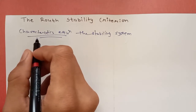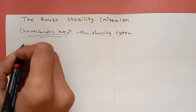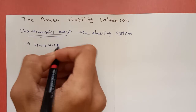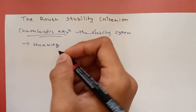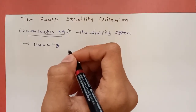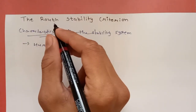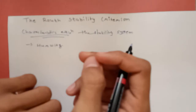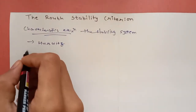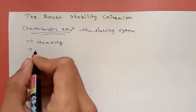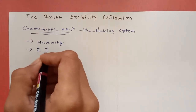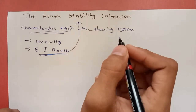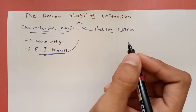The first scientist was Hurwitz, who indicated how we can find stability from the characteristic equation using a method of derivation — requiring a number of derivations. The other scientist, E.J. Routh, invented another method known as the Routh Stability Criteria, and we are focused on this method.